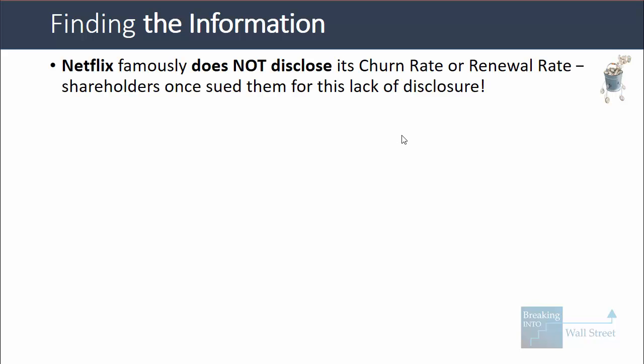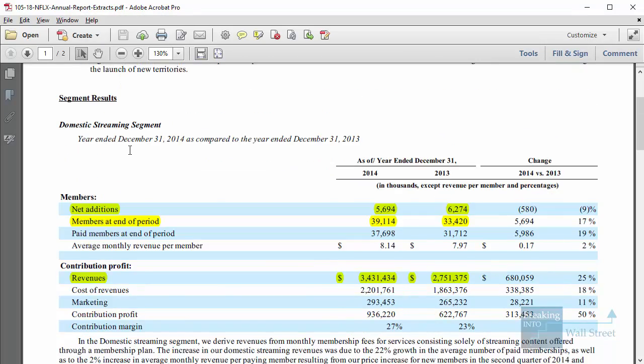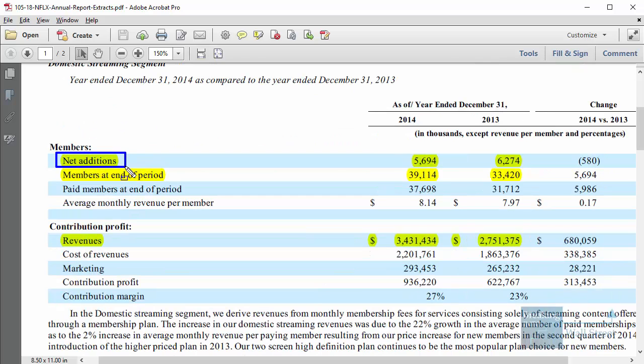Netflix famously does not disclose its churn rate or renewal rate — which are essentially the opposite of one another, looking at what percentage of customers cancel or stay subscribed year after year. They actually got in trouble once and went through a lawsuit because they didn't disclose this figure. What they do disclose for each segment are the net additions (new members that joined minus old members that left), the members at the end of each period, and the revenue for each segment. They also give the average monthly revenue per member, which we can calculate ourselves.